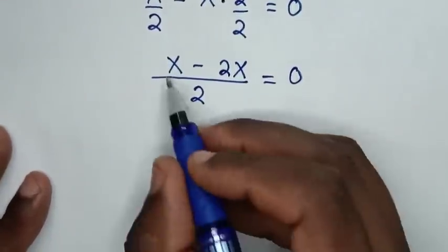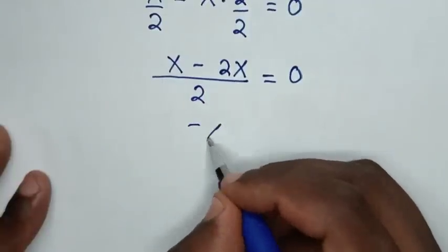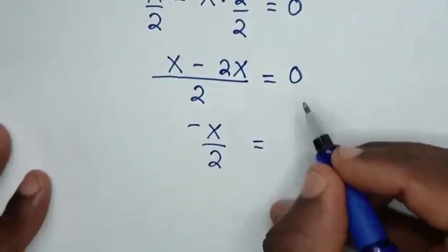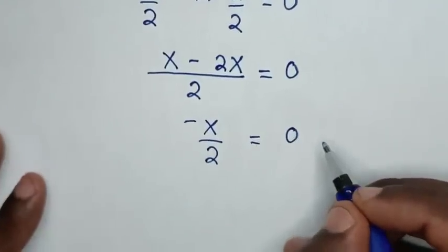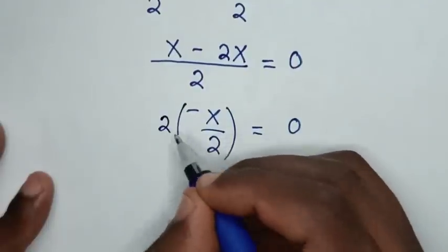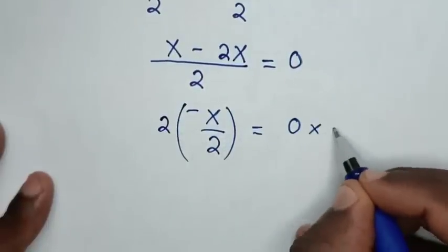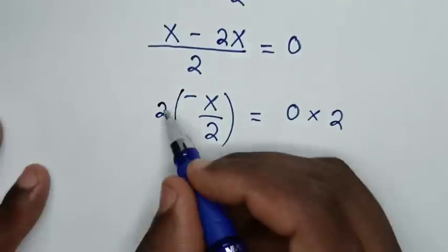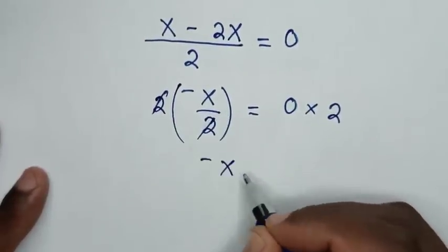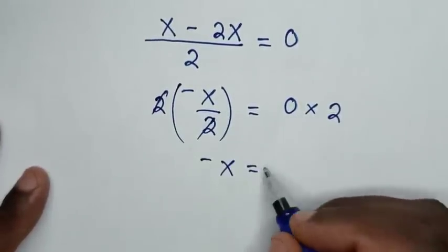Then this minus this equals negative x over 2, which equals 0. To cancel the denominator of 2, we multiply by 2 on both sides. This and this cancel, so negative x equals 0.